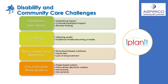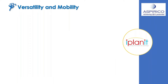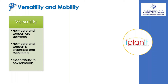Let's look at mobility and versatility. In terms of operations, how can we react to these challenges? Versatility is really about the care and support being delivered — how it's organised, how it's monitored, and how it's adaptable to different environments, from services ranging from supported independent living to day programs to in-home care. The same level of operational and service delivery quality is vital regardless of which work environment you are currently working in.